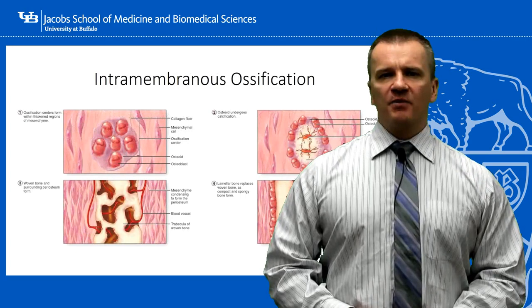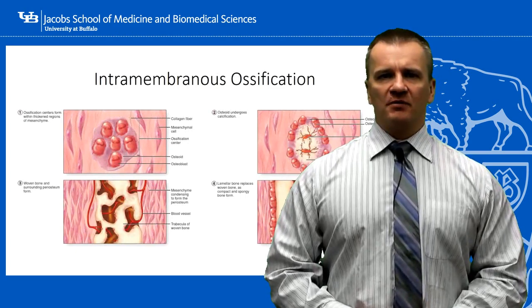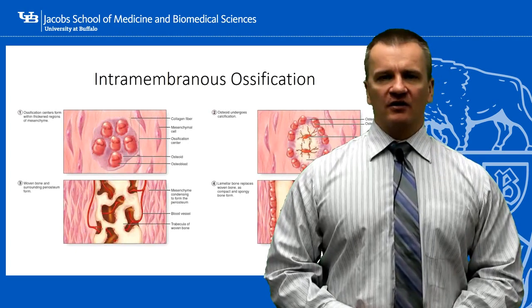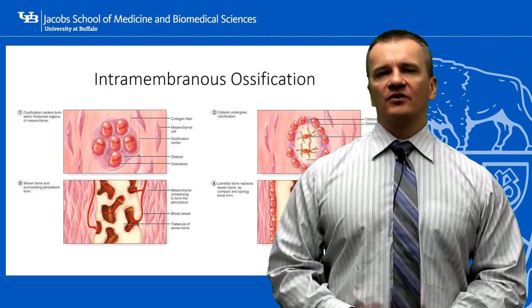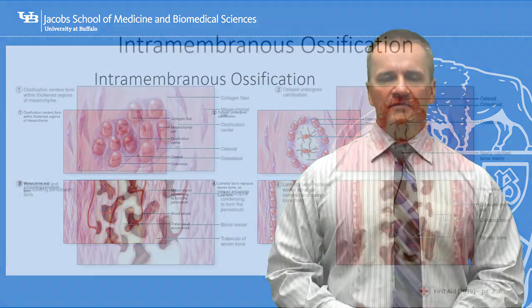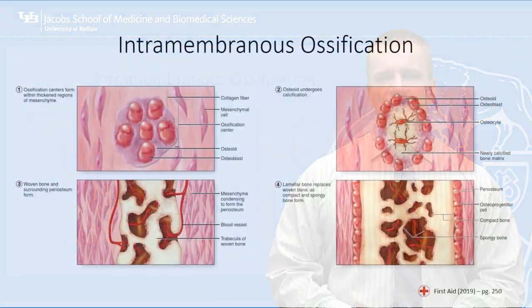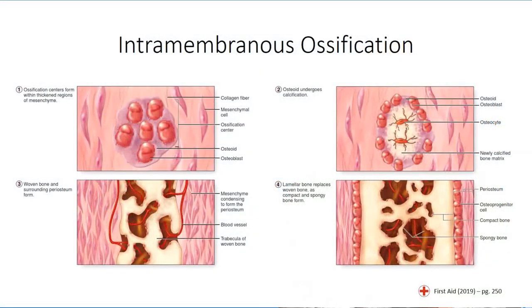The first type of bone growth to consider is intramembranous ossification. This is limited to only a small number of places in the body, such as the flat bones of the skull, but is conceptually easier to understand. Intramembranous ossification takes place spontaneously within mesenchyme without the generation of an initial cartilage model, which happens in the second type that we will be talking about.